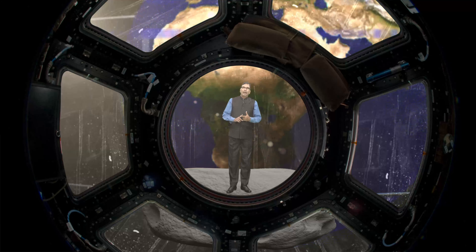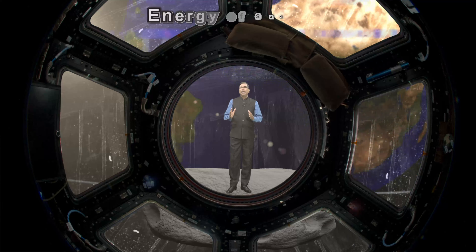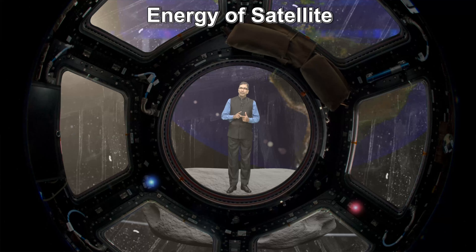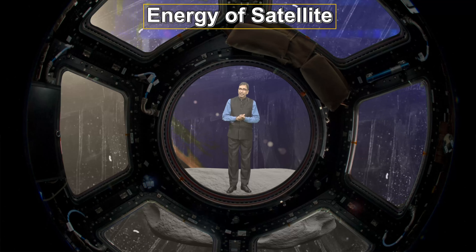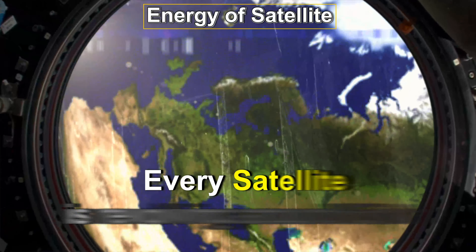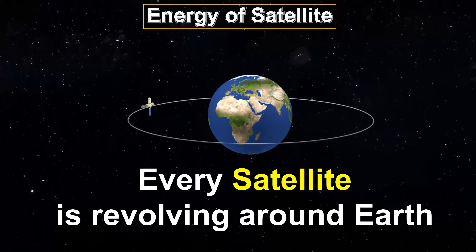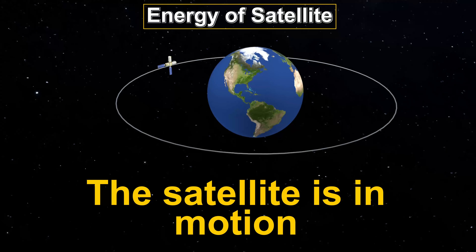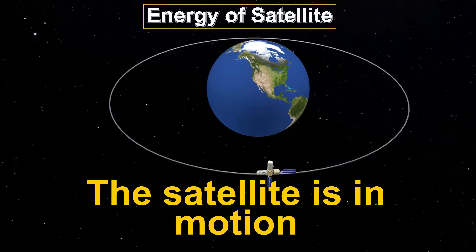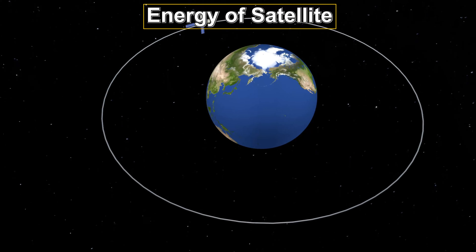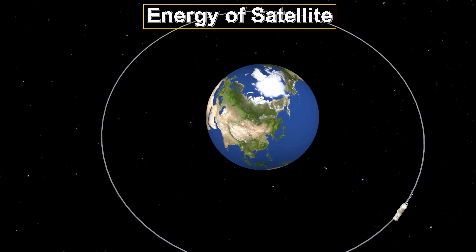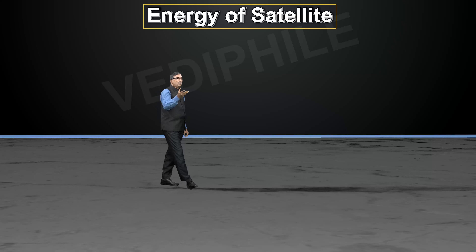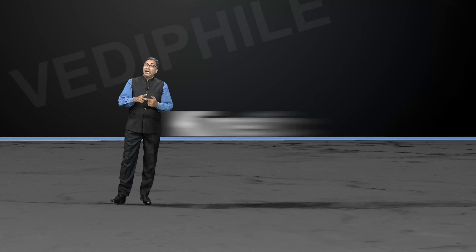Now we will talk about the energy of the satellite. We have seen the velocity and the time period, now we will talk about the energy of the satellite. Every satellite is revolving around Earth, it means the satellite is in motion. If any object is in motion, that means it has some velocity. The satellite also has orbital velocity. Therefore, the satellite has kinetic energy.